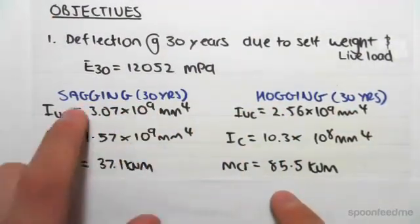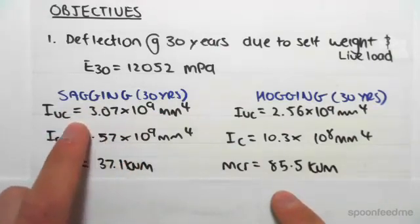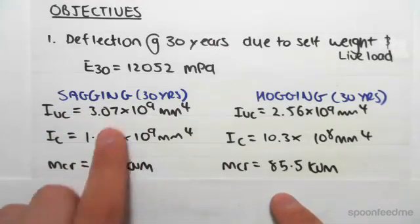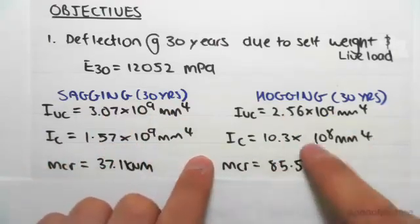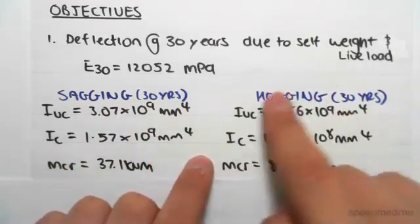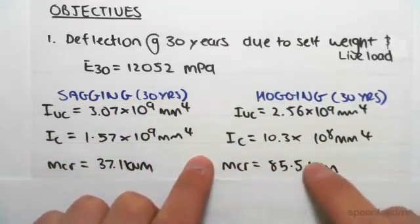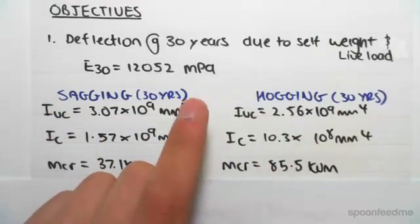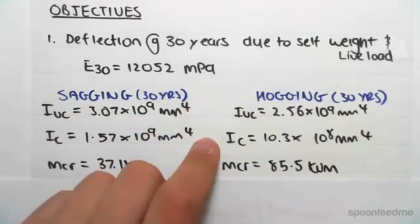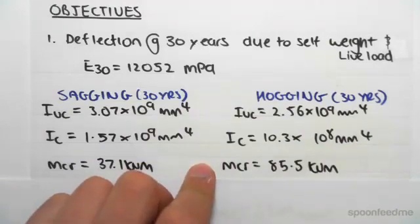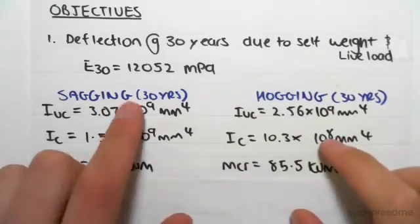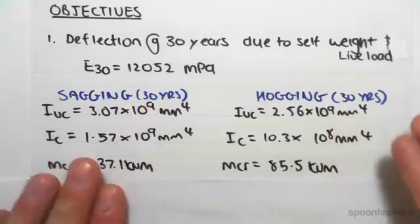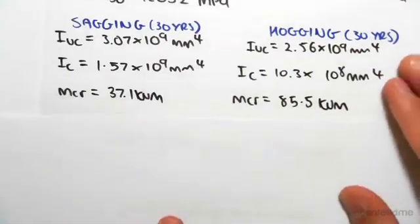In the previous videos, we found all these values: I_uncracked, I_cracked, and M_cracked. We haven't done the hogging case, but I'm going to assume that knowing the process, you could do this as well. So I'm giving you the values for I_uncracked, I_cracked, and M_cracked for both the sagging case and the hogging case — both are the 30-year properties. We're going to be using all these values in this video.